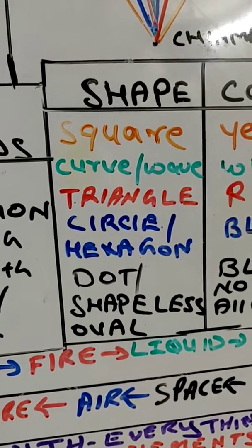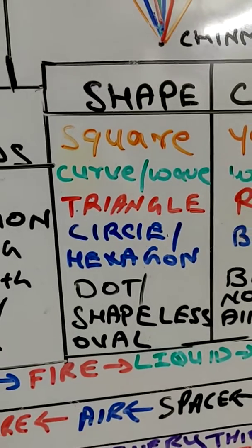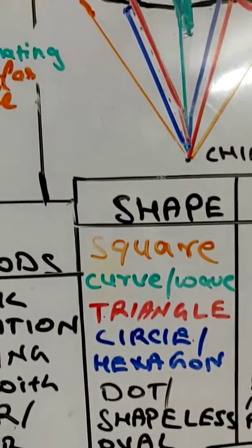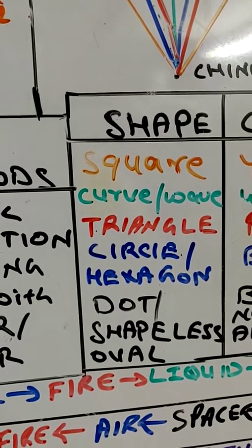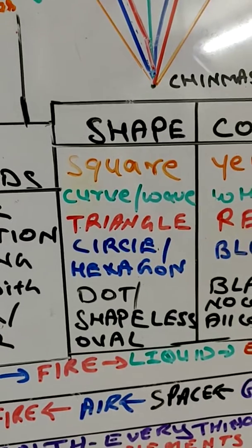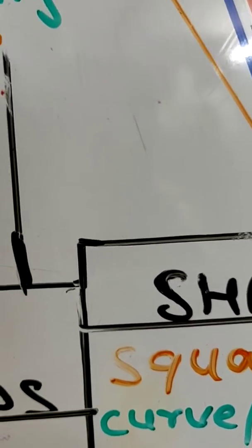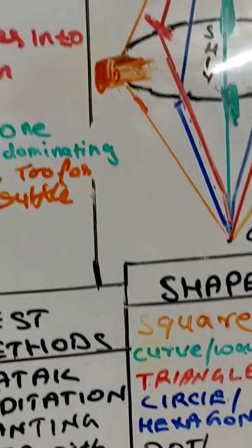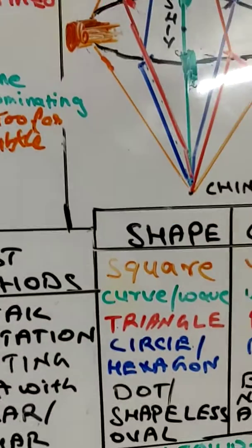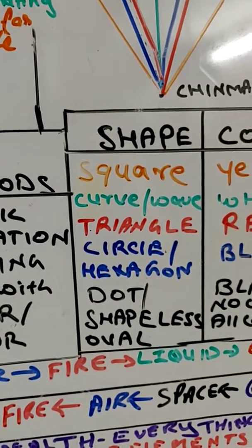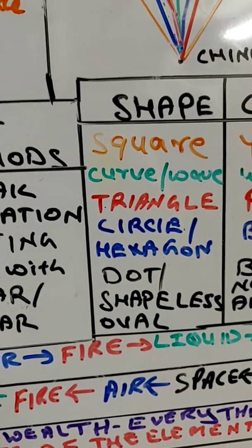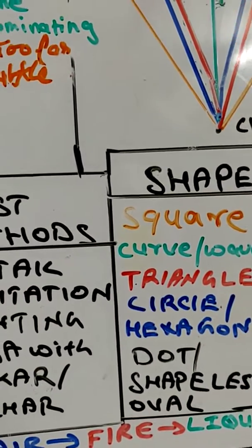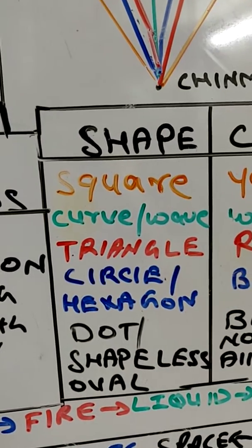Now we talk about the shapes. The shape of earth element is square — wherever a square shape is, it will create the dominance of earth element. Curve or wave — like water waves, like a rose petal or lotus petal, an S-curve that rises and falls — that is the nature of the water element. It rises and it falls; that is the nature of creation. Triangular shape is the shape of fire element — making a triangle will affect the fire element.